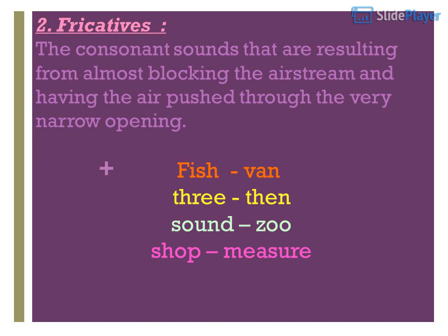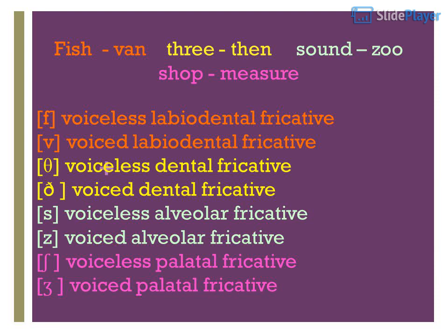Example words: fish, van, three, then, zoo, shop, measure. F — voiceless labiodental fricative. V — voiced labiodental fricative. Theta — voiceless dental fricative. Voiced dental fricative. S — voiceless alveolar fricative. Z — voiced alveolar fricative. Voiceless palatal fricative. Voiced palatal fricative.